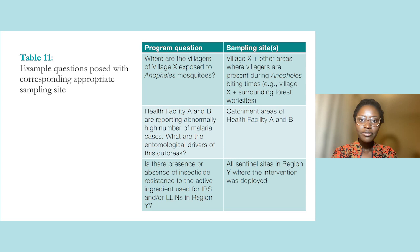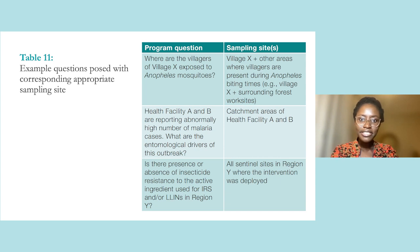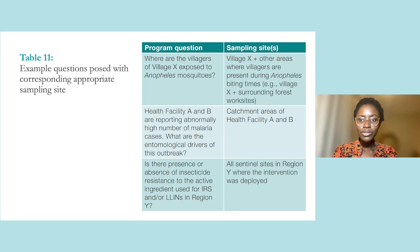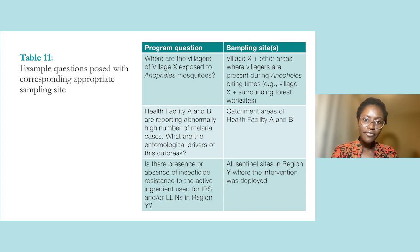This is Table 11, titled 'Example Questions Posed with Corresponding Appropriate Sampling Sites.' The first column provides examples of commonly posed priority program questions, and the second column provides examples of appropriate sampling sites. For instance, for the question 'Where are the villagers of village X exposed to Anopheles mosquitoes?' a suitable sampling site could be village X and the other areas where villagers are known to be present during Anopheles biting times. Always select sampling sites located in the area you need to learn more about to address your question. If you have capacity for a limited number of sites, select sampling sites based on epidemiology first. You can refer to Module 4 for more guidance on site selection.